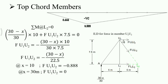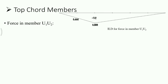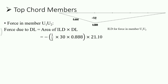We draw the influence line diagram for force in member U1U2. The ordinate at X equal to 0 is 0, at 5 meters is minus 0.444, at 10 meters is minus 0.888, and at 30 meters is 0. The complete influence line diagram is in compression. Force due to dead load equals area of ILD into dead load: minus half into 30 into 0.888 into 21.1, giving minus 281.05 kN, which is compressive.